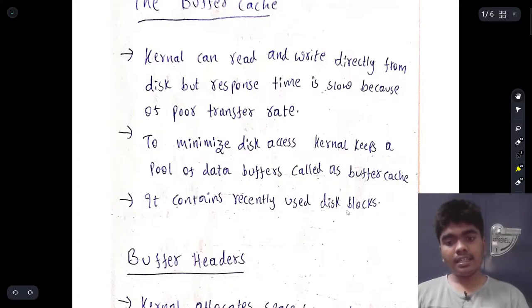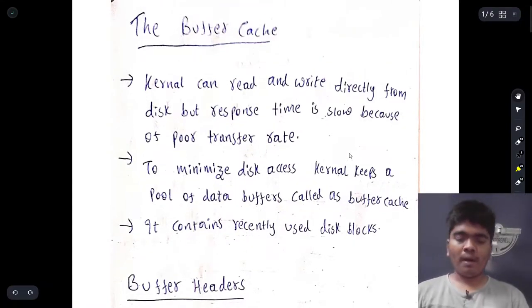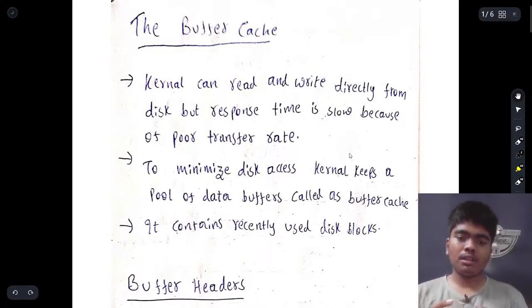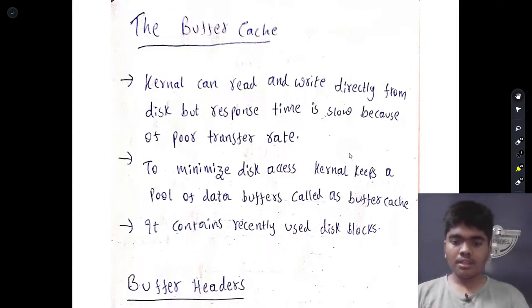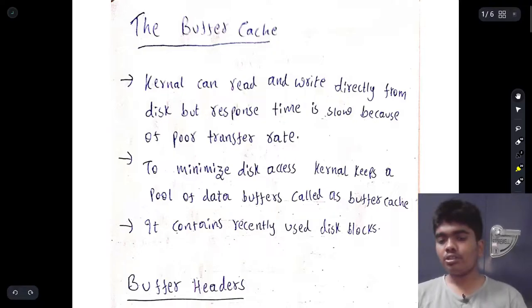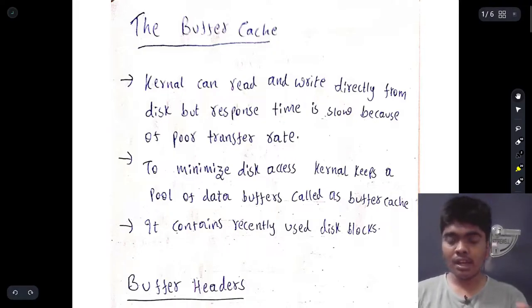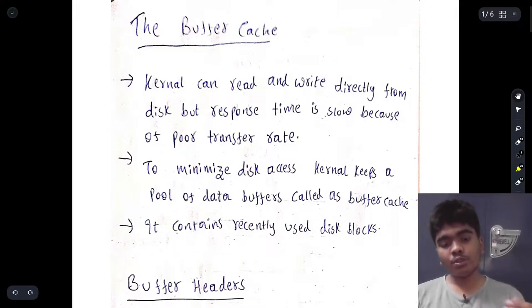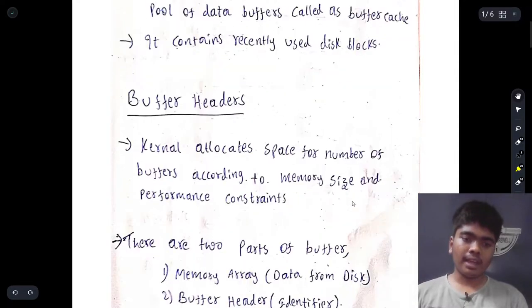The buffer cache contains recently used disk blocks. It stores only the disk blocks which were used frequently and very recently. Not every disk block will be stored in the buffer cache — only the recently and frequently used ones.